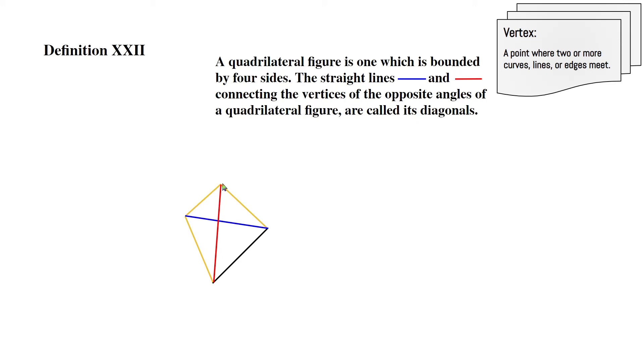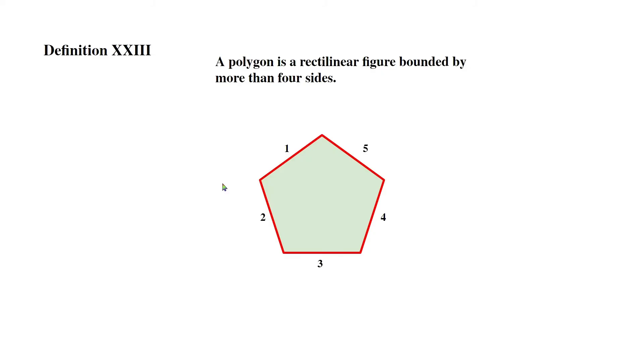Definition XXIII: A polygon is a rectilinear figure bounded by more than four sides. Same concept as the triangle, but instead of three sides, a polygon is a rectilinear figure bounded by more than four sides. Over here I just have one example which is a pentagon. It has more than four sides, so it is a polygon.